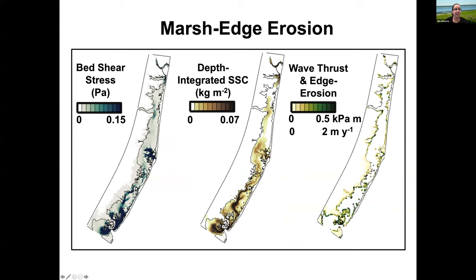One of the first things we looked at was time-averaged maps of hydrodynamic conditions and marsh edge erosion. On the left are time-averaged bed shear stress maps, with darker colors indicating higher values. The middle panel shows depth-integrated suspended sediment concentration, and on the right are wave thrust and marsh edge erosion — these are proportional to each other. Higher values appear near the inlets due to fast tidal currents and waves propagating into the estuary, especially near Little Egg Inlet.